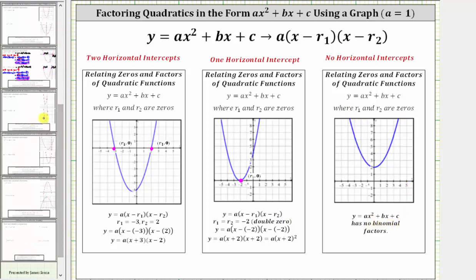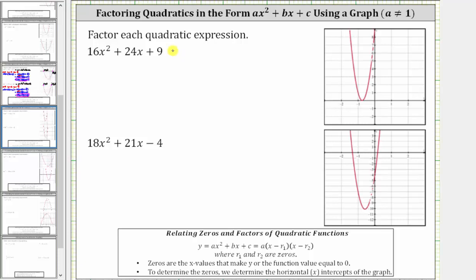For our example, we begin by graphing y equals 16x squared plus 24x plus nine. I've already graphed the function here on the right, and we can see how the graph touches the horizontal axis and then bounces back. Therefore, we do have a double zero here at this horizontal intercept. It's unclear as to what the ordered pair would be for this point, and therefore we will calculate it using the TI-84.